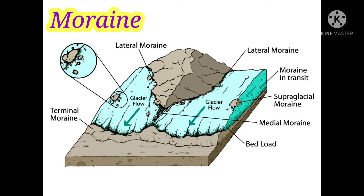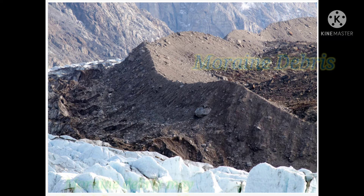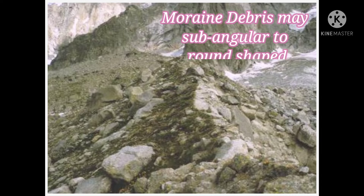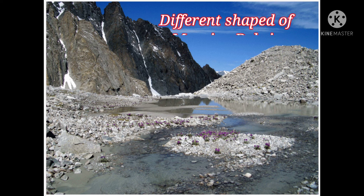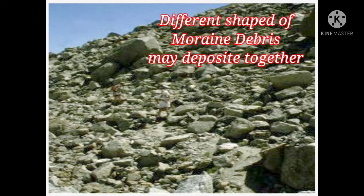Moraines are nothing but accumulation of debris or glacial till by a moving glacier, which may form distinct ridges or mounds. They are found on the way of a glacier or at the end of a glacier. The shape and size of moraine debris may vary — from as small as silt on the glacier floor to as large as a boulder. The shape of moraine debris may be subangular to round. In the case of moraine deposits, all unsorted debris are deposited together.